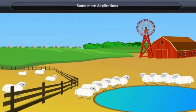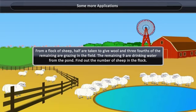Some more applications. From a flock of sheep, half are taken for rearing wool and three-fourths of the remaining are grazing in the field. The remaining nine are drinking water from the pond. Find out the number of sheep in the flock.